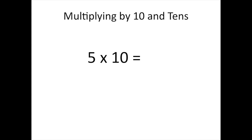Solve the following problem: 5 times 10. 5 times 10 equals 50. We know that when a whole number is multiplied by 10, a zero is added to the whole number because the number becomes 10 times larger. So each digit is moved to the next higher place value. To do this, we add a zero to the ones place and move the five to the tens place.